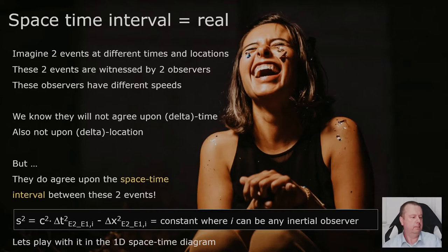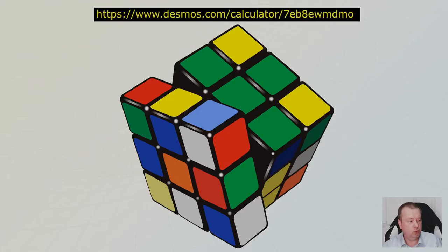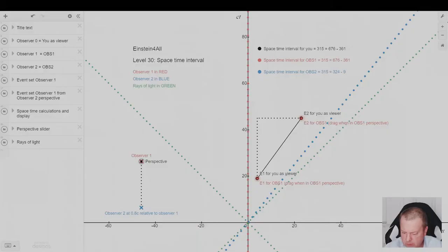But let's play with it in the one-dimensional space-time diagram. I built this online. You can go there. Here is the link. Just follow me and I will talk you through. Let me see if I can switch my screen. Yes. There it is. The space-time diagram. What do we see?